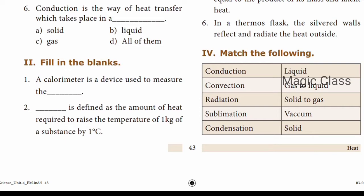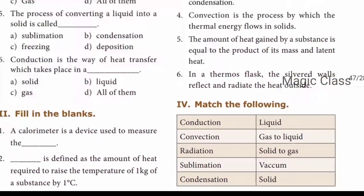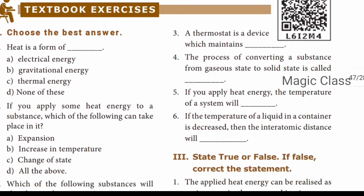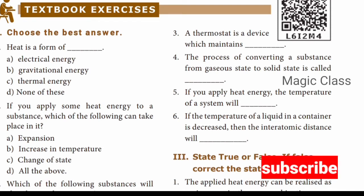The answer to fill in the blank two is specific heat capacity. Question number three: A thermostat is a device which maintains the temperature of an object constant - a thermostat is used for this. Question number four: The process of converting a substance from gas state to solid state is called deposition.